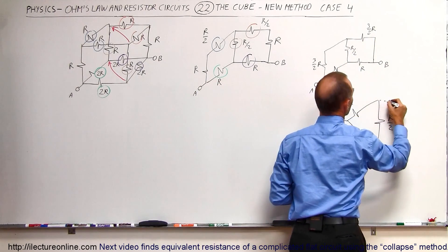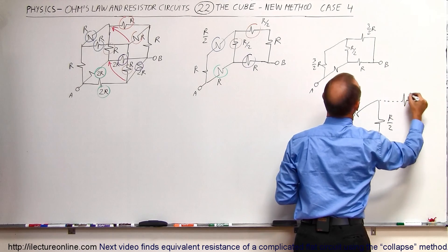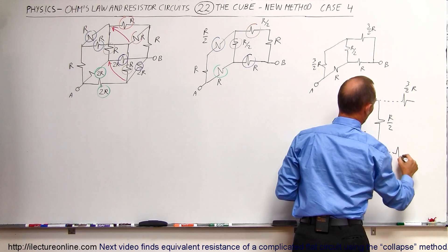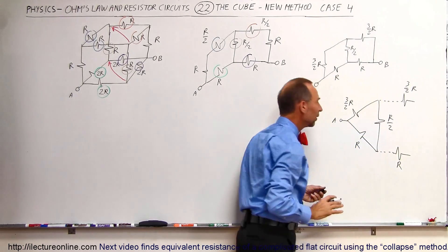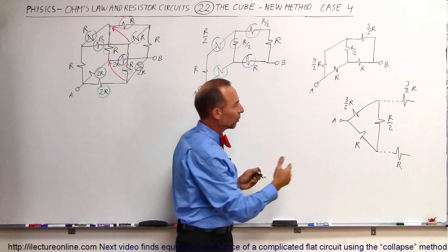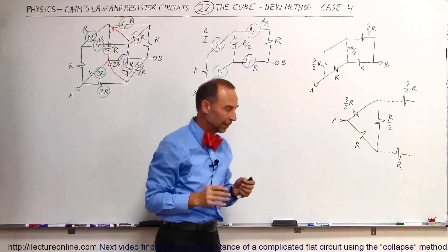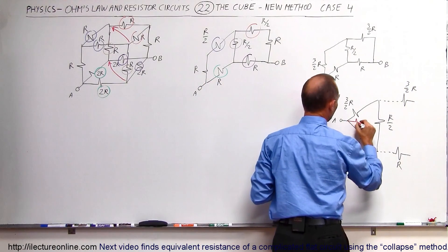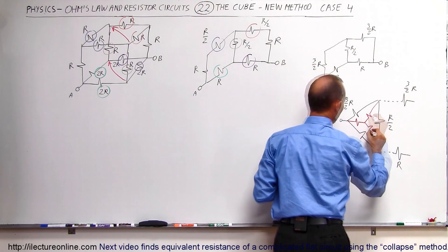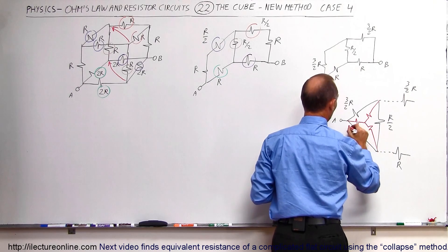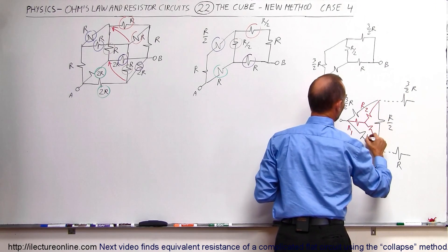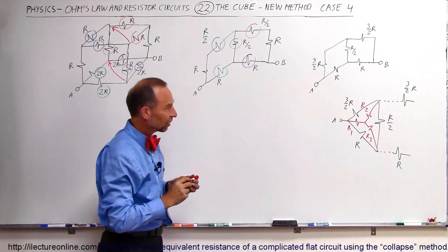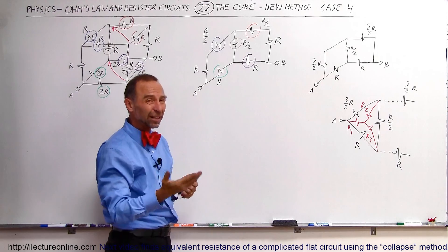And then we have two additional resistors: a 3/2R resistor and at the bottom a 1R resistor. We want to convert the delta circuit into what we call a Y circuit — a delta-to-Y conversion — which means it's going to look like a Y shape with R1, R2, and R3 as the three resistors.